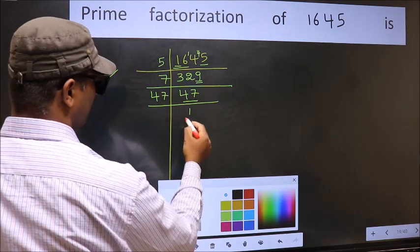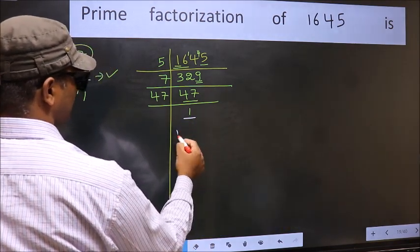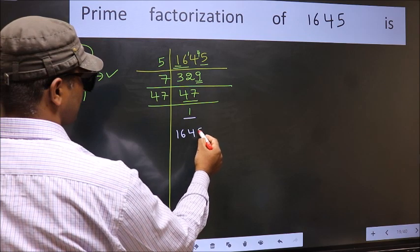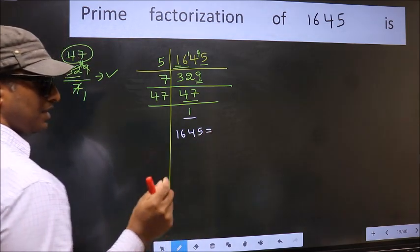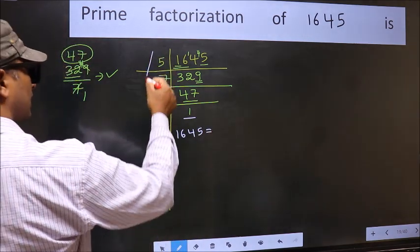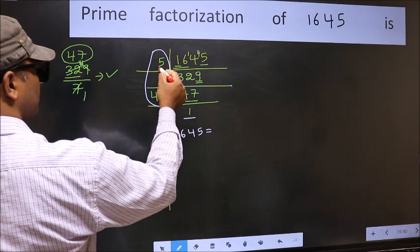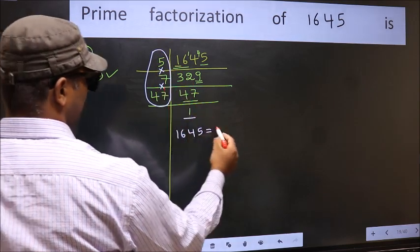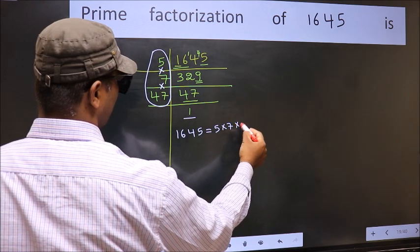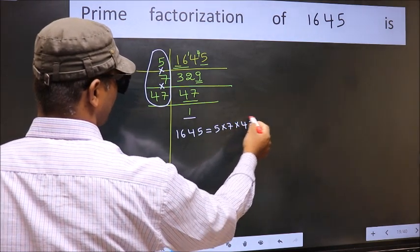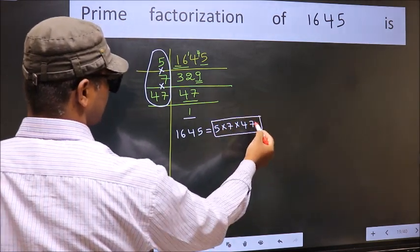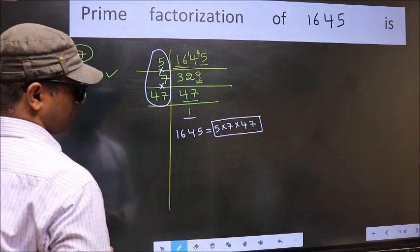So we got 1 here. So the prime factorization of 1645 is the product of these numbers: 5 times 7 times 47. This is the prime factorization of 1645. Bye.